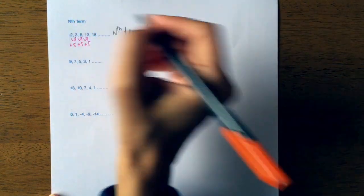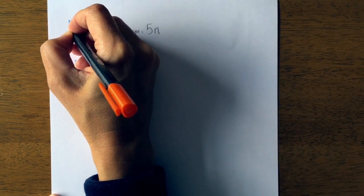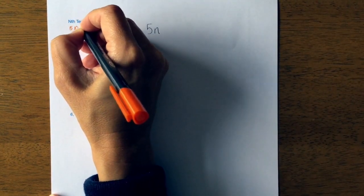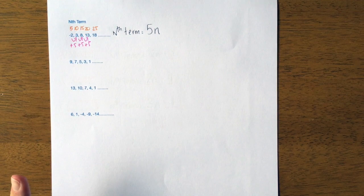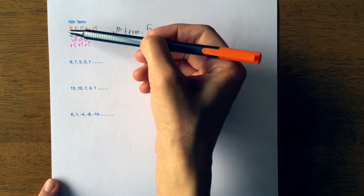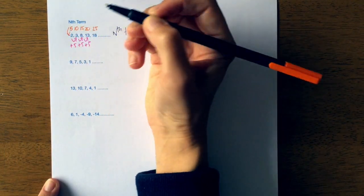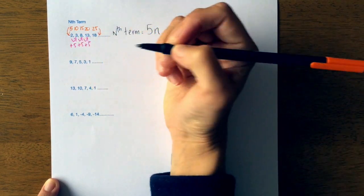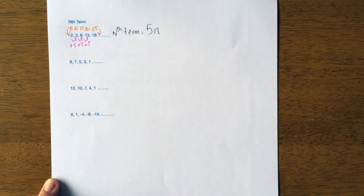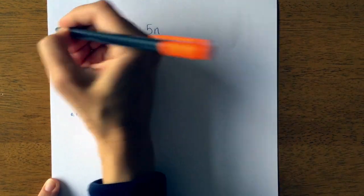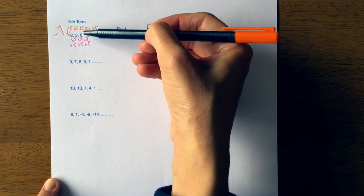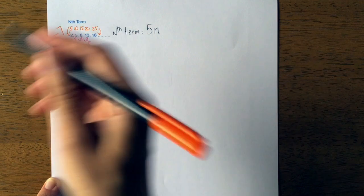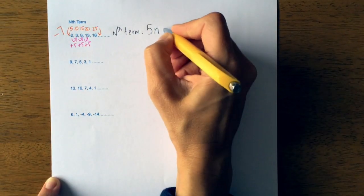My 5n represents my times table: 5, 10, 15, 20, 25. Now I need to figure out how it's gone from the 5 times table to the new sequence. We've taken away 7 because we've gone from 5 to negative 2, 15 to 8, 20 to 13 and so on. So it was take away 7.